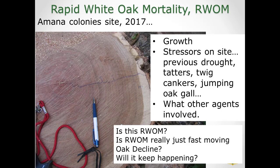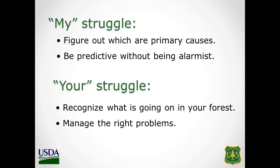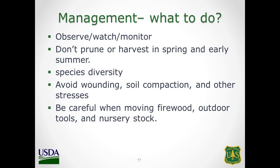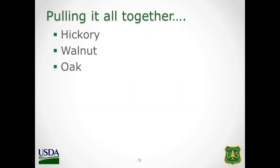My struggle is to figure out which things are primary causes and be predictive without being alarmist. Your struggle as a landowner is to recognize what's going on in your forest, know what's important, and manage the right problems. For management with oaks: observe, watch, and monitor. Don't prune oaks in the spring — that's the oak wilt thing. Maintain species diversity. Avoid wounding and soil impact — those are huge. And let's not move our pests around: be careful when moving firewood, tools, and nursery stock.